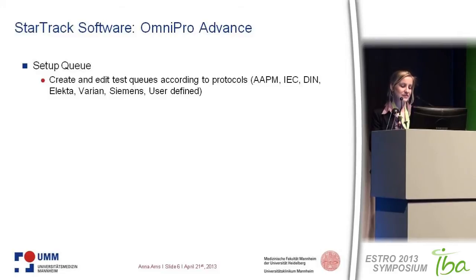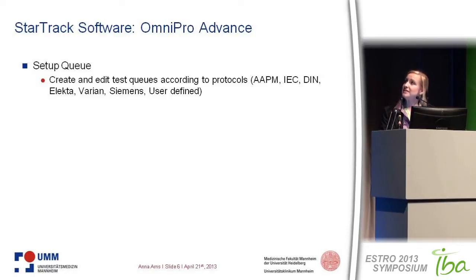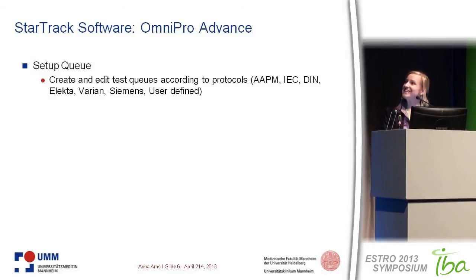The software working with the Star-Track device is the OmniPro Advanced software. You can also use it with the Matrix device. It has four sections. The first is the setup queue, where you can create and edit your test queues according to various templates for protocols — AAPM, the German DIN, vendor-specific protocols, or you can define your own.